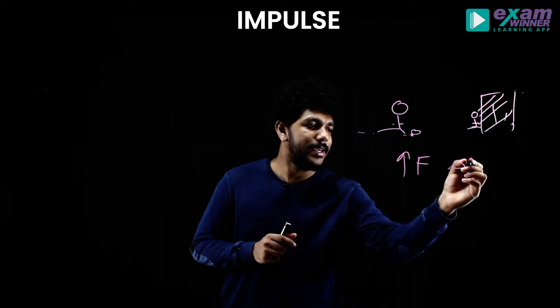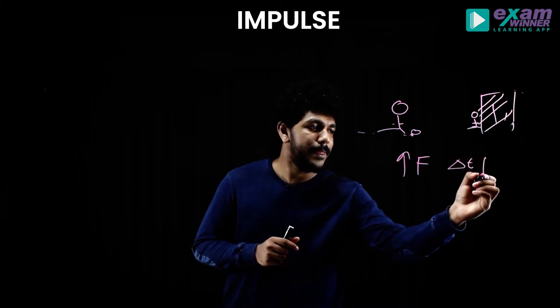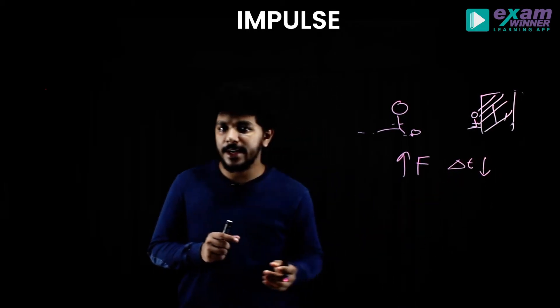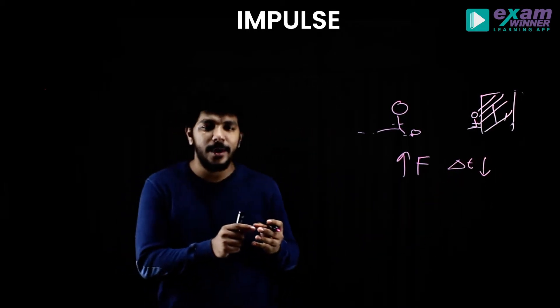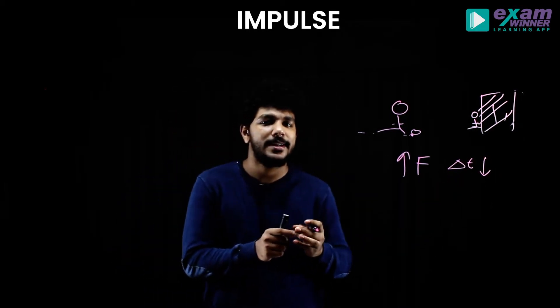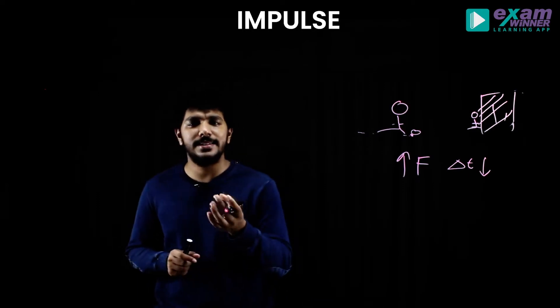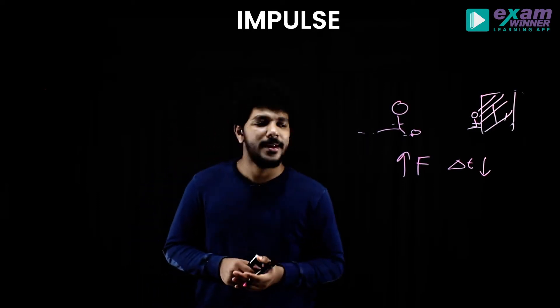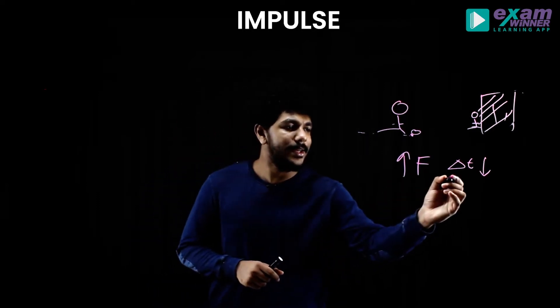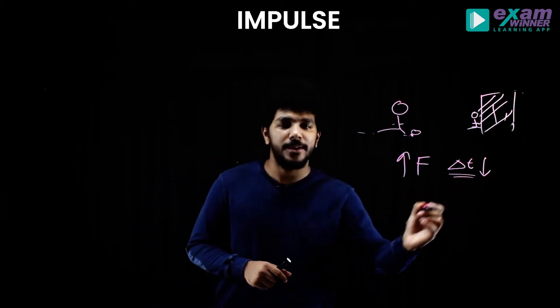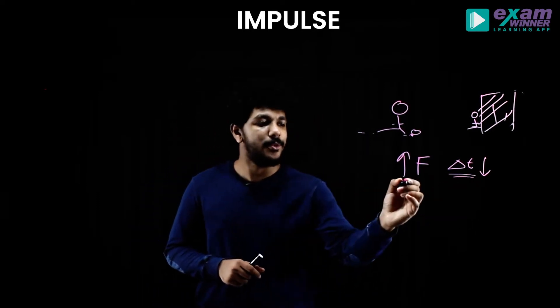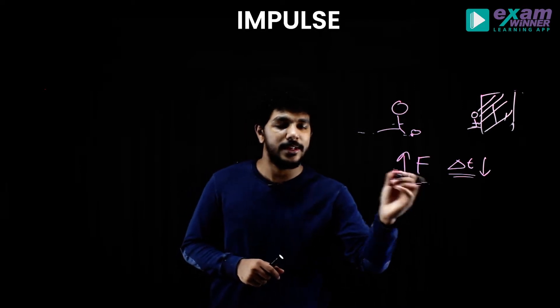So delta-t — time — is very small. When you have contact time, that time of contact is in milliseconds, about 1.0 seconds at most. So delta-t is very small.